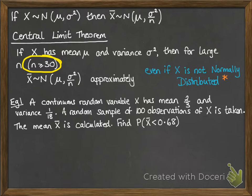Now we are working out the sample mean X̄, and we want to find the probability that the sample mean is less than 0.68. We have 100 observations, so we can use the Central Limit Theorem because that's more than 30.